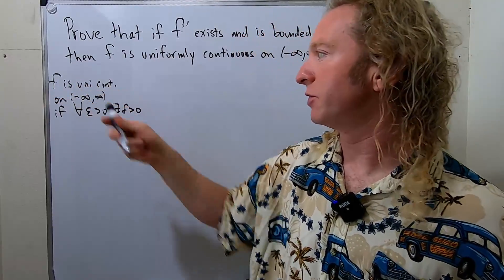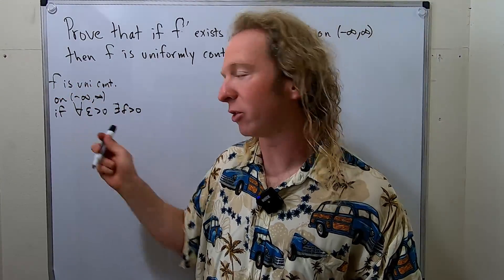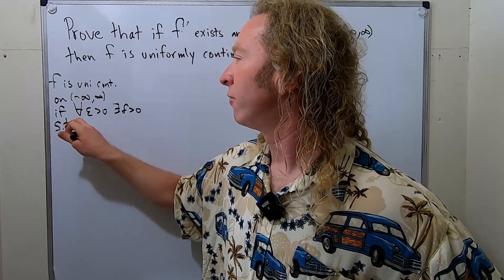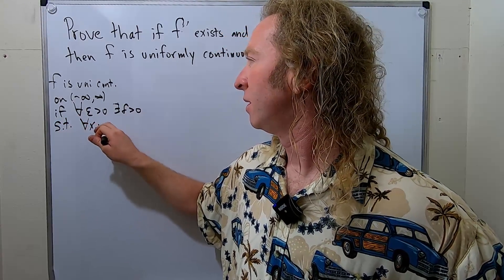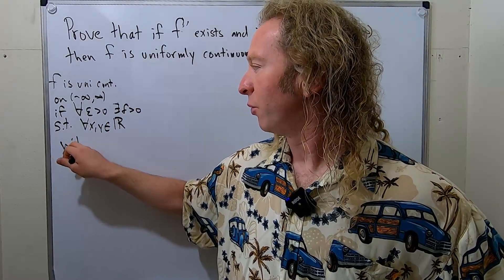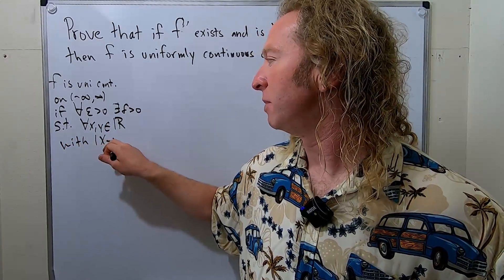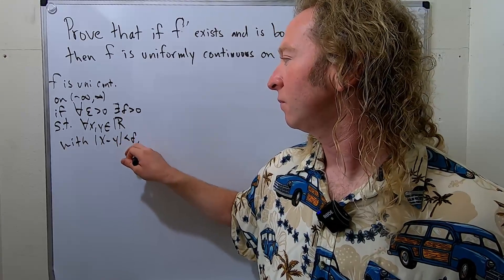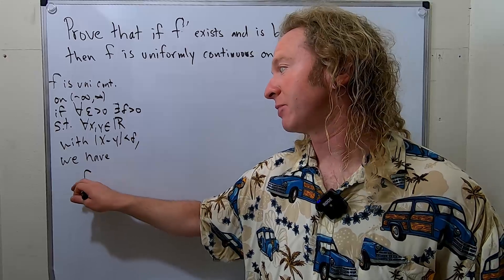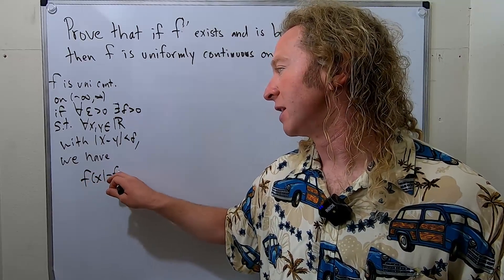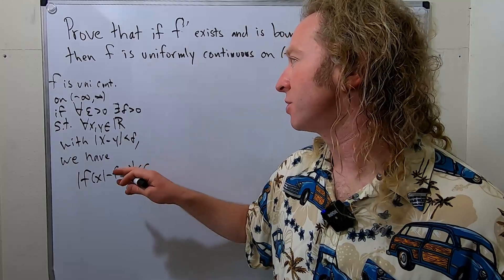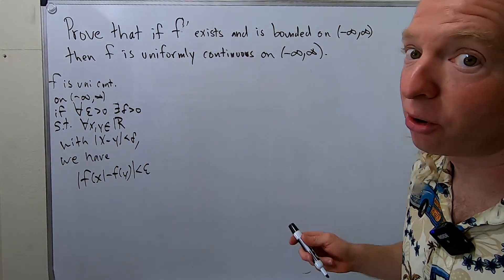So f is uniformly continuous on the set of real numbers if for all epsilon greater than zero, there exists a delta greater than zero such that for all x and y in the set of real numbers, with the distance between x and y being less than delta, we have the distance between f(x) and f(y) being less than epsilon. That's the definition we need, because that's what we're trying to show.